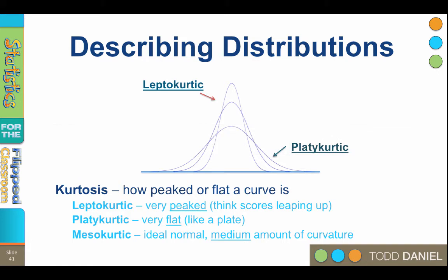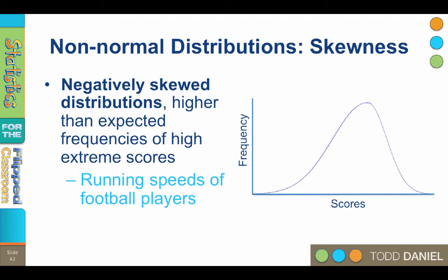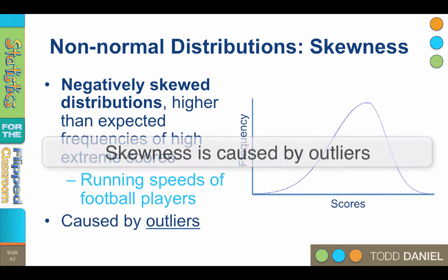Another thing that can happen to a curve is when the scores are pulled out in only one direction. When the scores are dragged out in only one direction, this creates a skew in our curve. Therefore we need to talk about the skewness of our distribution. Negatively skewed distributions have a higher than expected frequency of high or extreme scores on the right, and the tail is pulled out to the left end of the number line on the x-axis. For example, if we were interested in the running speeds of football players, we might find a lot of very fast players, but only a few slower runners. Skewness is always caused by outliers in the direction of the tail.